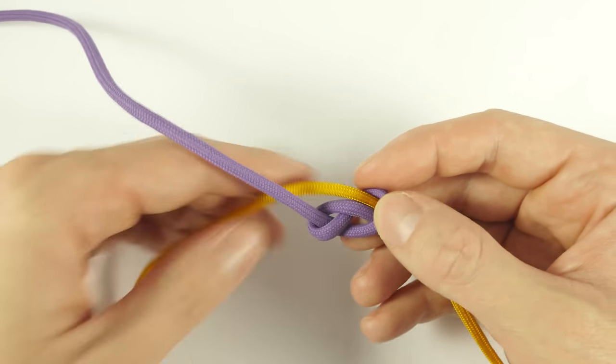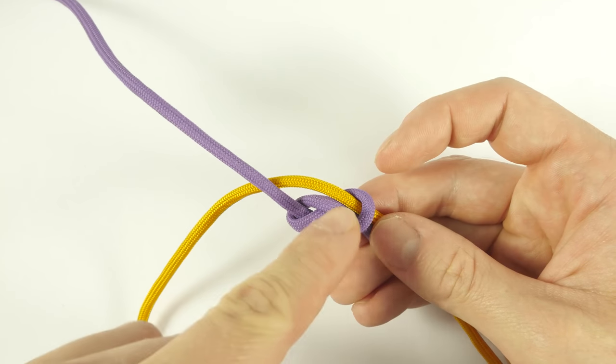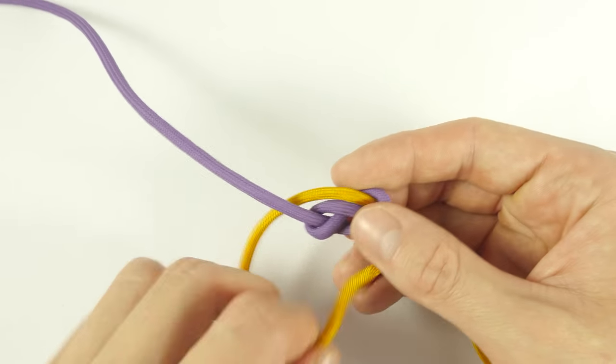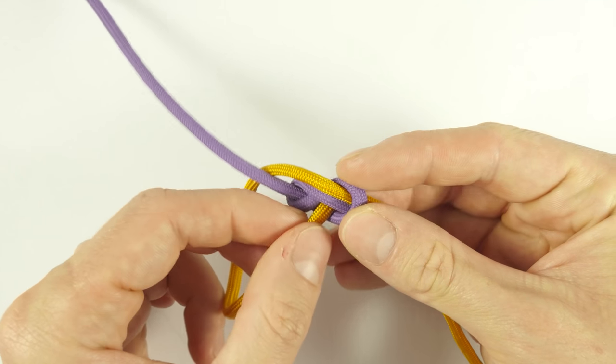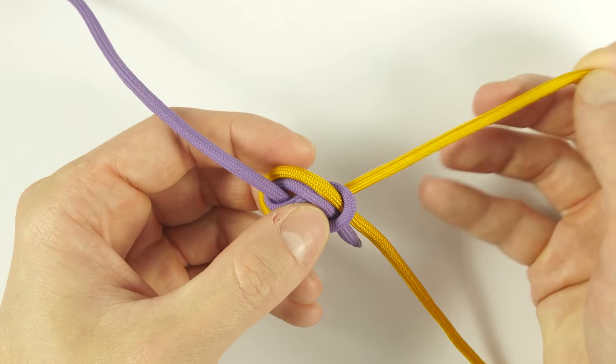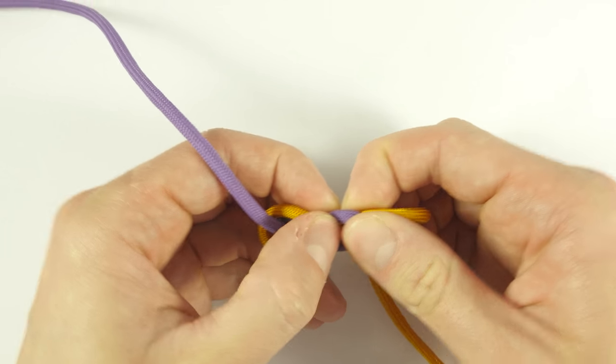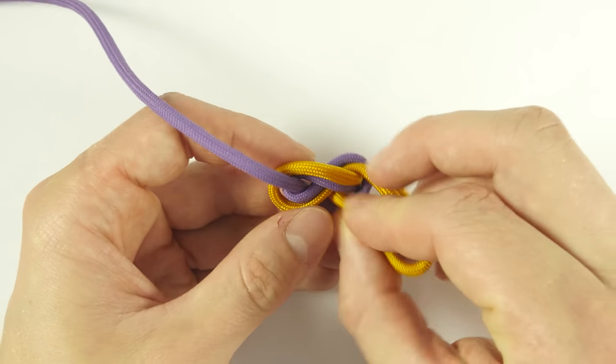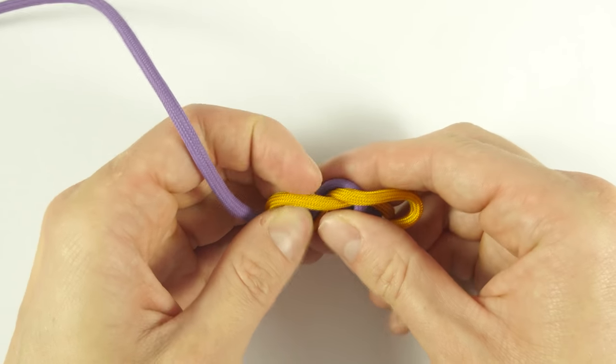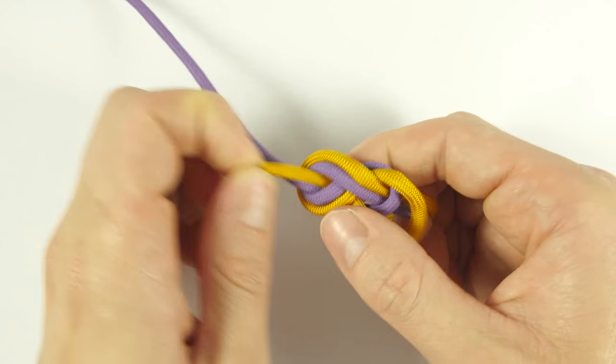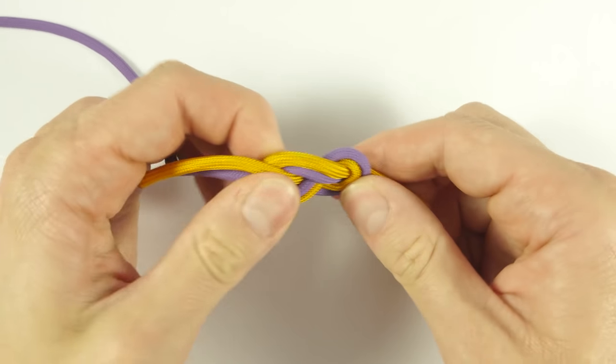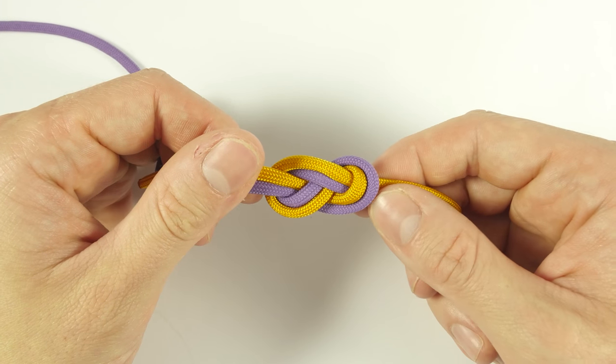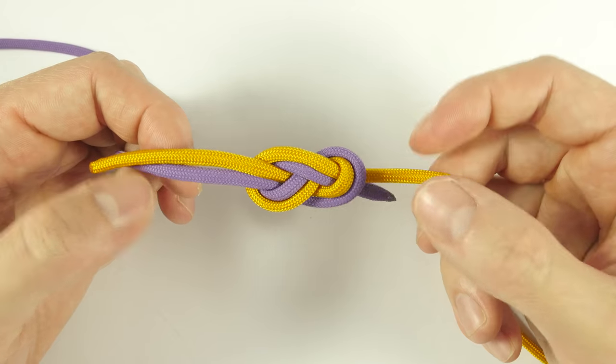So all we're doing is doubling up the figure 8 knot with a second piece of rope. Like this. With the figure 8 knot we have now joined two pieces of rope together.